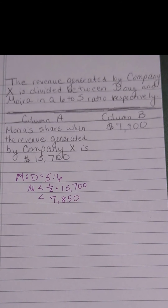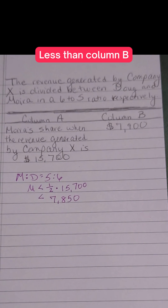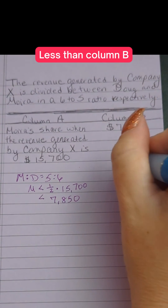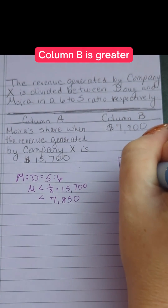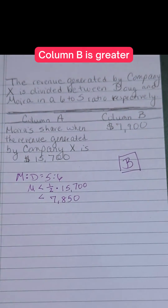And if it's less than $7,850, then it's definitely going to be less than column B. So the correct answer is B — column B is greater.